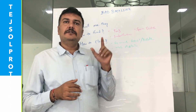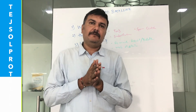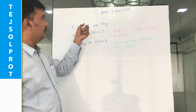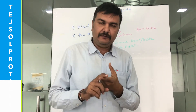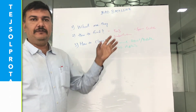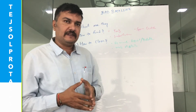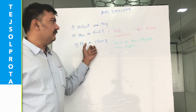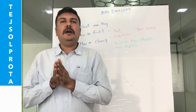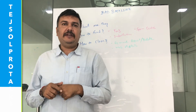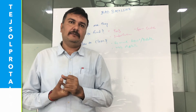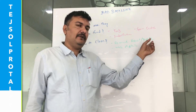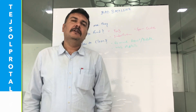Once you have identified the bad links, start the removal process. First, list down all the links you want to remove. If you own the credentials — for example, if you submitted your site to a spammy directory — check your emails for the login, log in, and delete your listing.